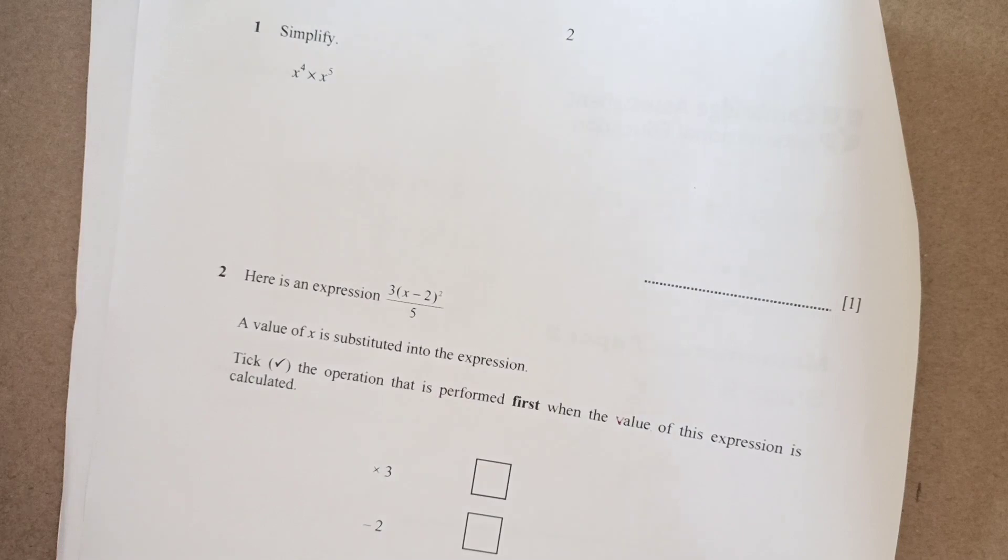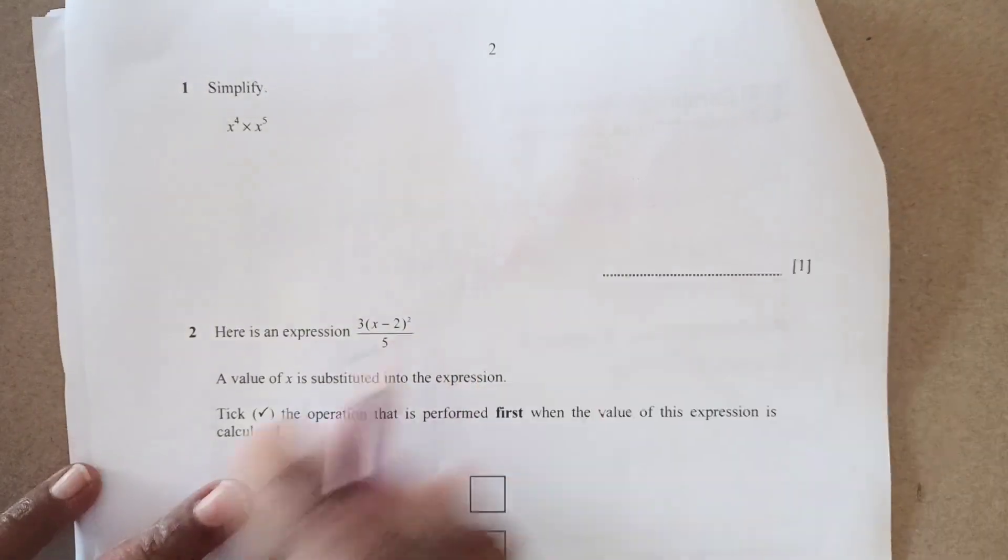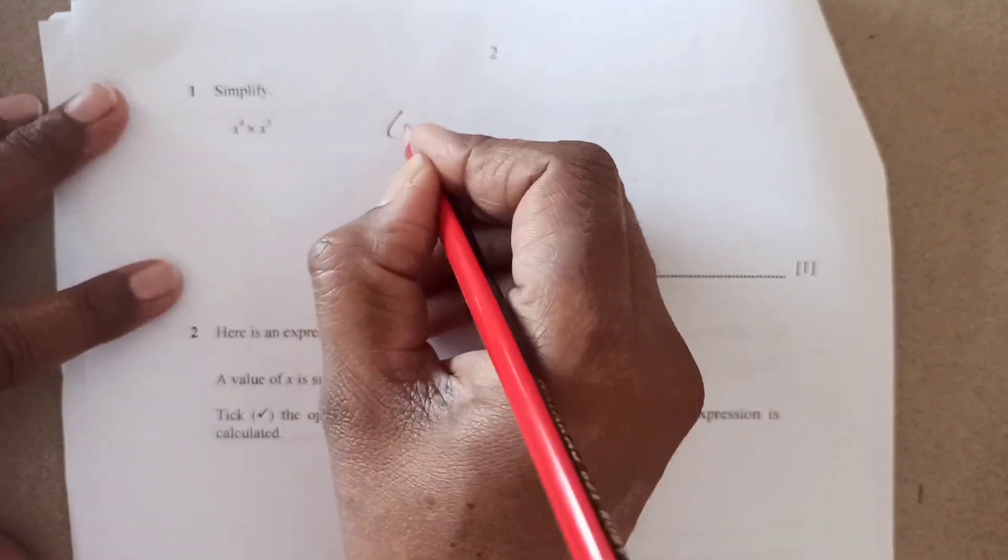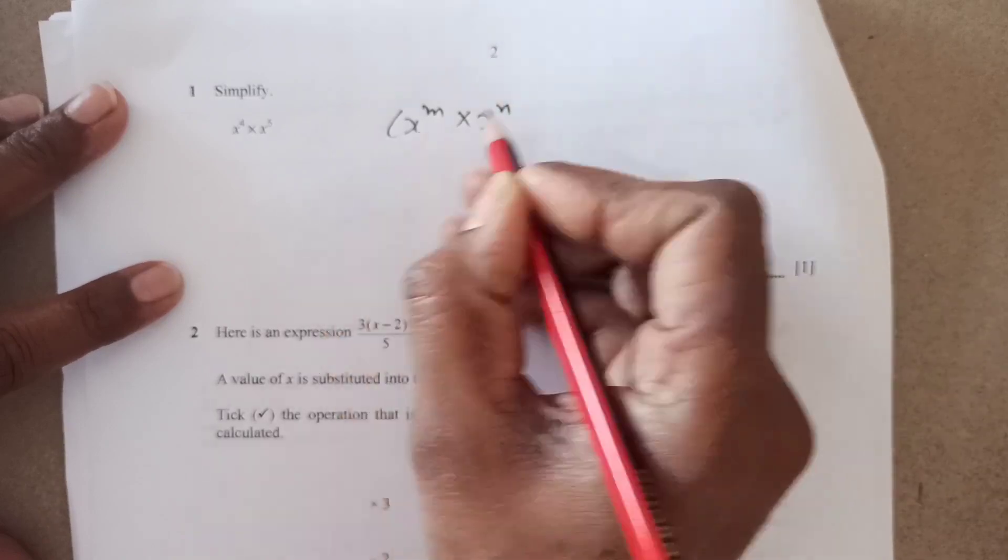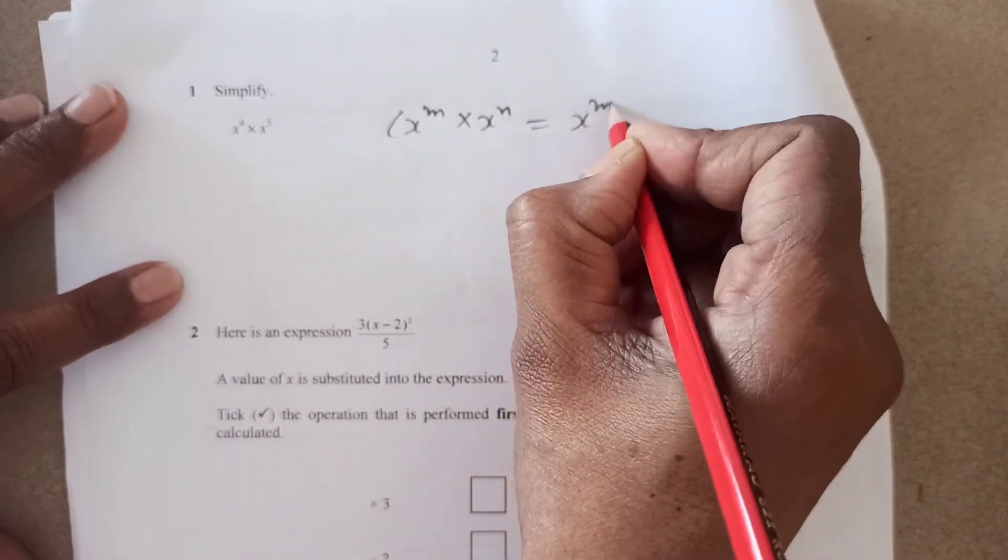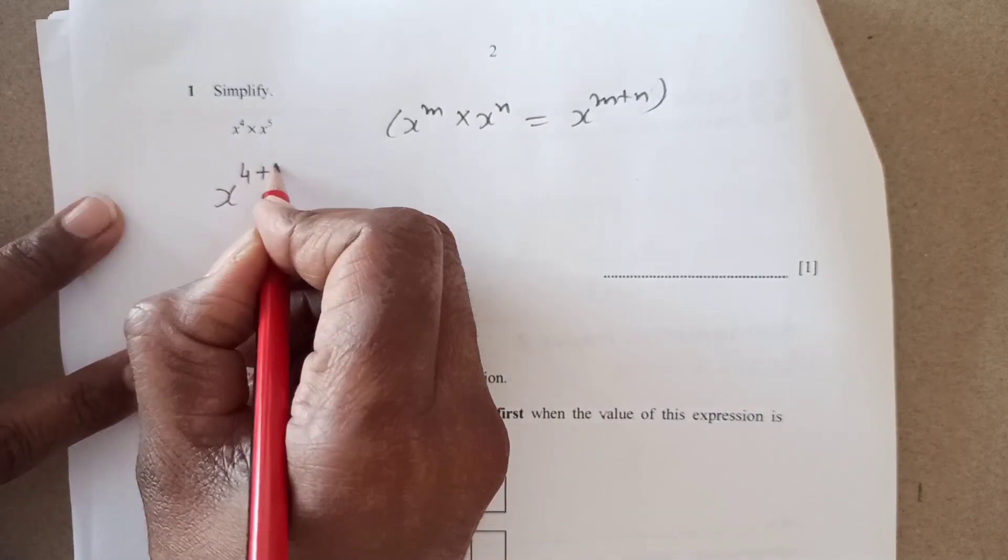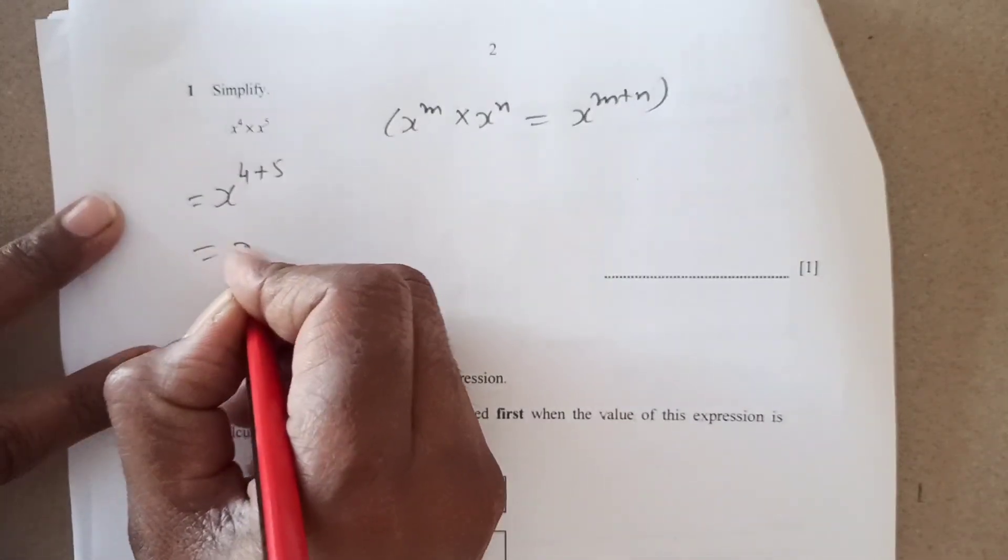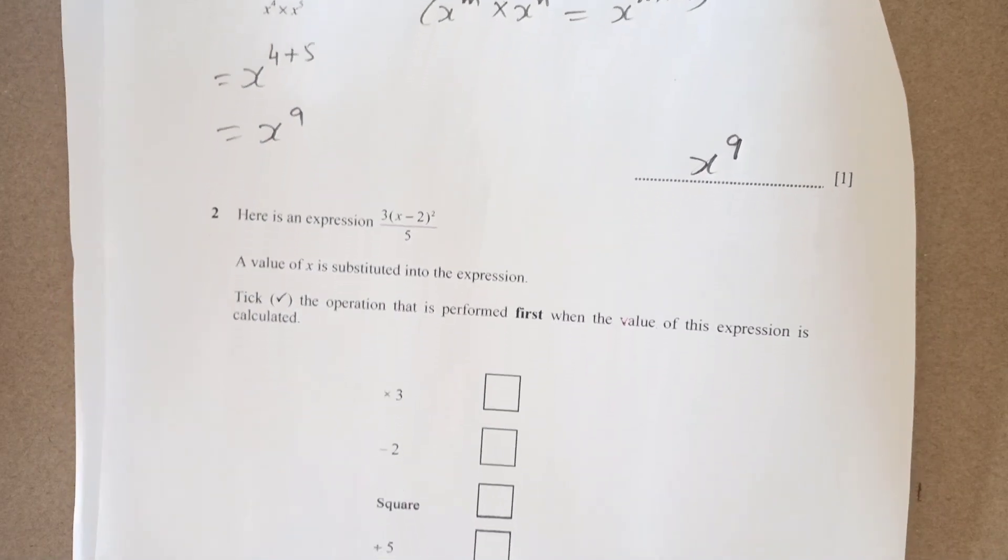The first question that I have here is simplify x power 4 times x power 5. We are using laws of exponents here, which is very important. x power m times x power n when base is same you are going to add the powers right. So this is x to the 4 plus 5. Final answer is x power 9.